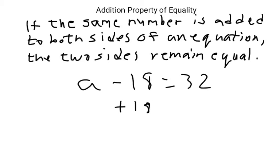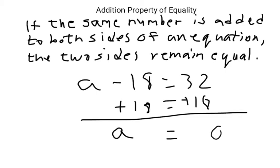And whatever I do to the left side, I have to do to the right side. So I have to add 18 here. This is the addition property of equality. There's a zero pair. Add 18 and subtract 18 as a zero pair, leaving a equals 50. And I'll do 50 minus 18 equals 32. And it does. So it's right.